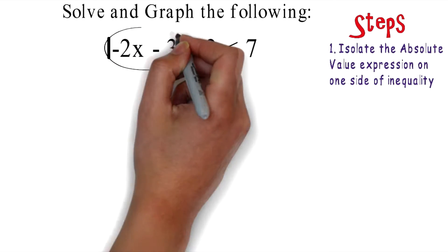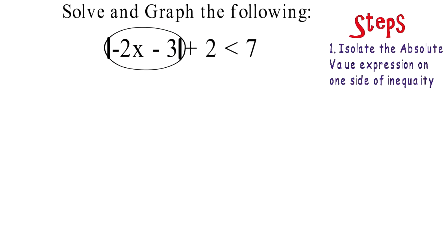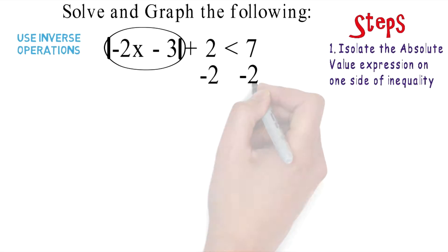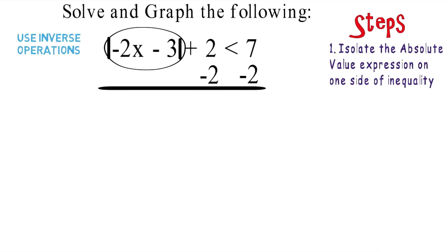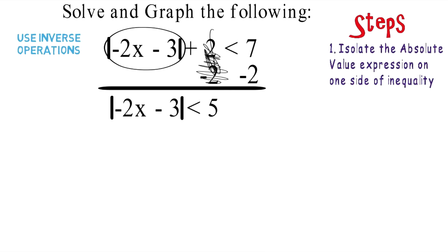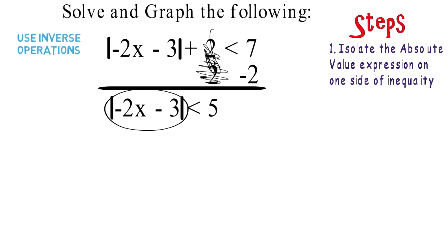So identify the absolute value expression — here it is. Now you want to use inverse operations. Subtract two from both sides of the inequality. Positive two and negative two cancel each other out. You are left with the absolute value of negative two X minus three is less than five. Notice the absolute value expression is isolated, so we can check off step number one.